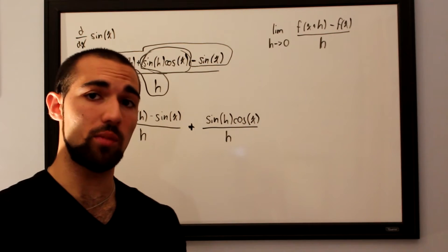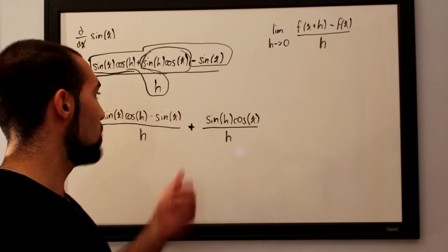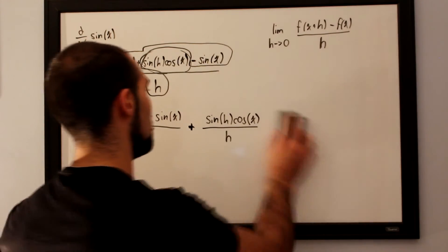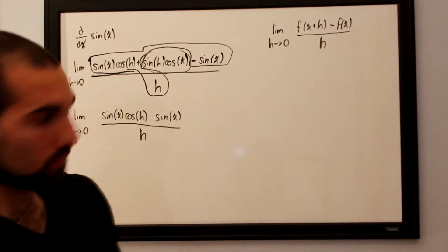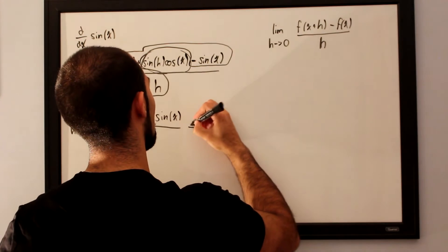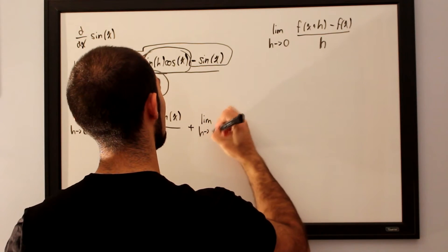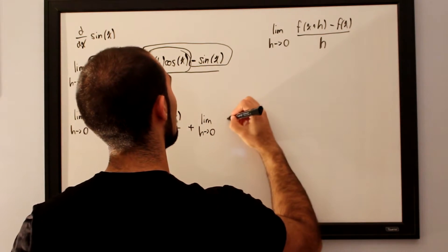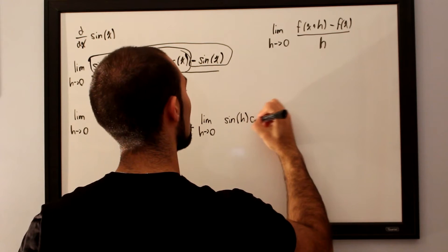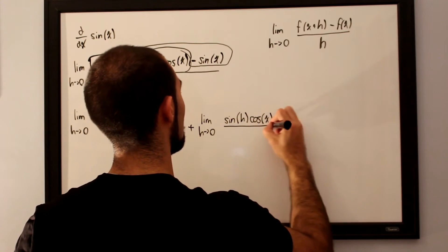We know that the limit of a sum is simply the sum of the limits, so we can split this off into two different limits altogether. This gives us the limit as h approaches 0 of sine of h cosine of x over h.